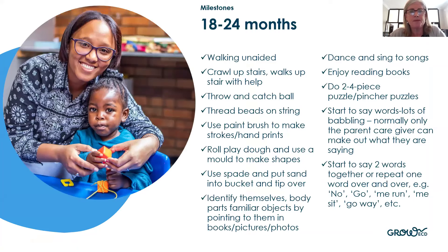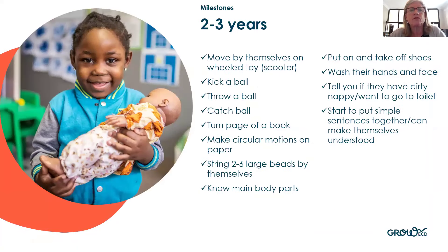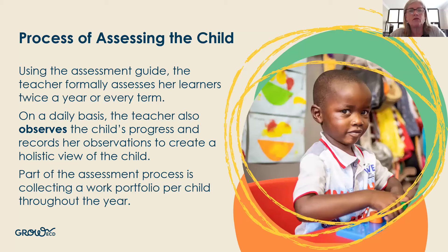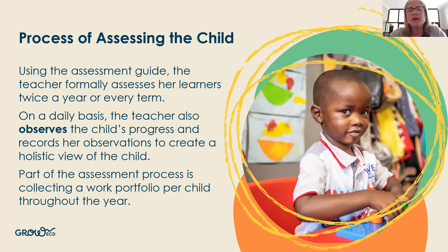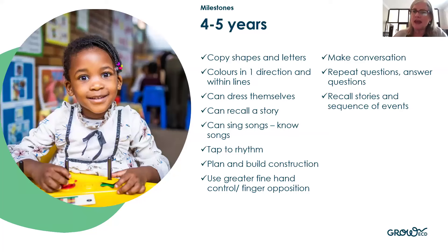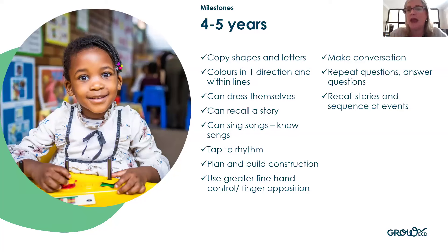Here are some of the milestone suggestions — like doing a two to four-piece puzzle or kicking a ball at the different age groups. Those lists of milestones guided the questions that have been asked in the learner assessment. For example, a question is 'recall stories and sequence of events' — a four to five-year-old should be able to start doing that. That was used to create the questions in the assessment.